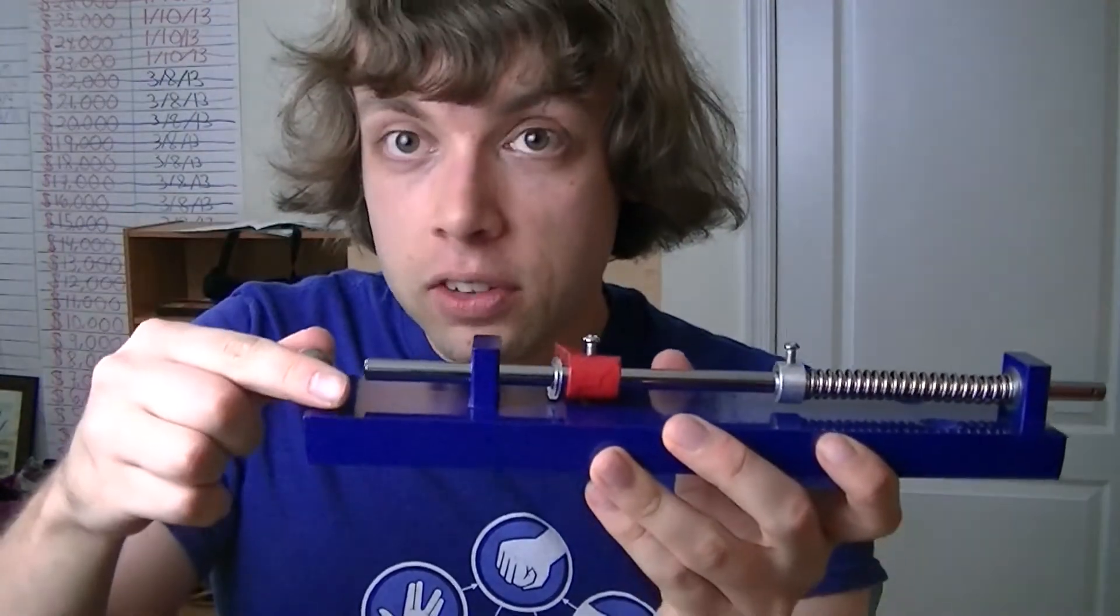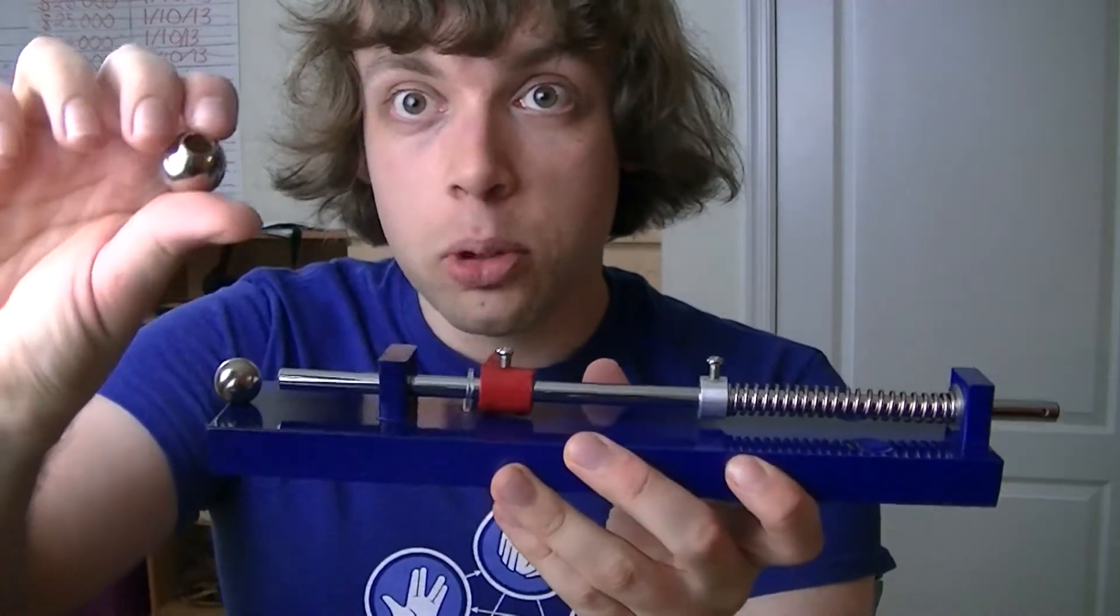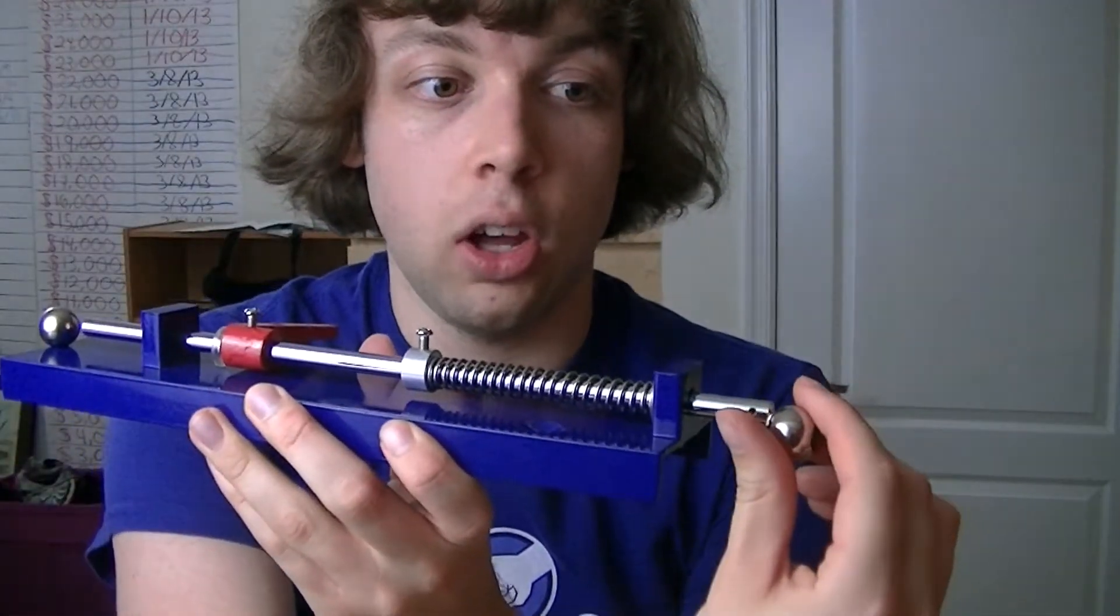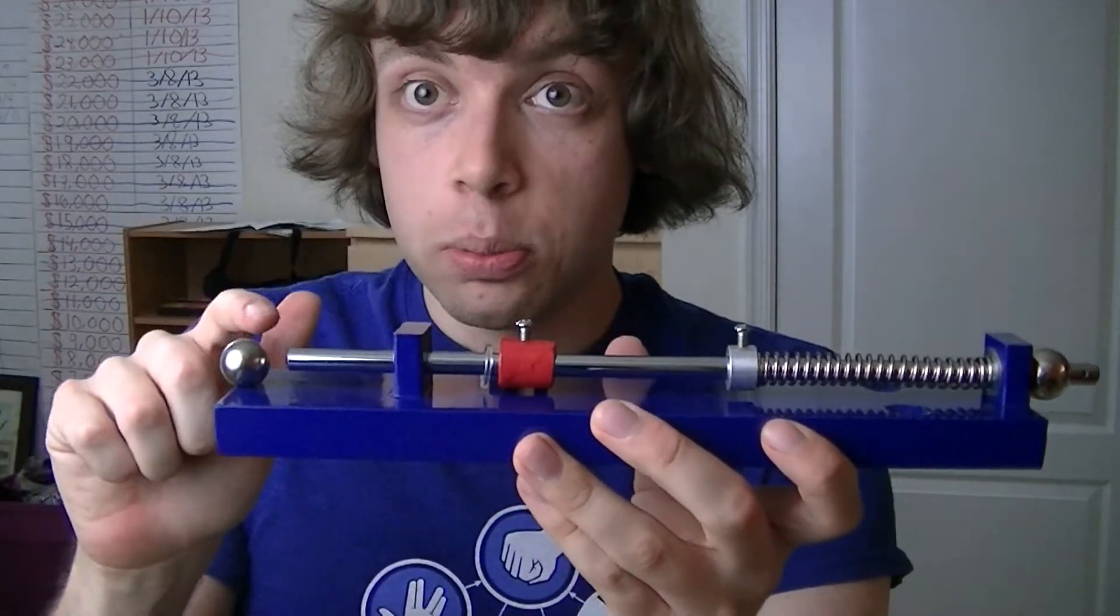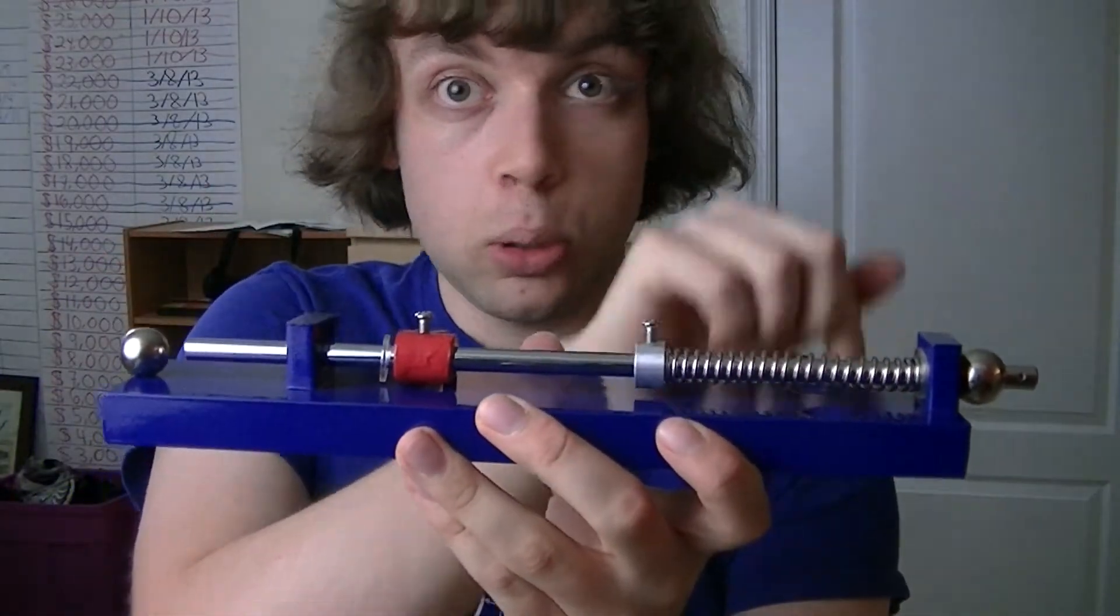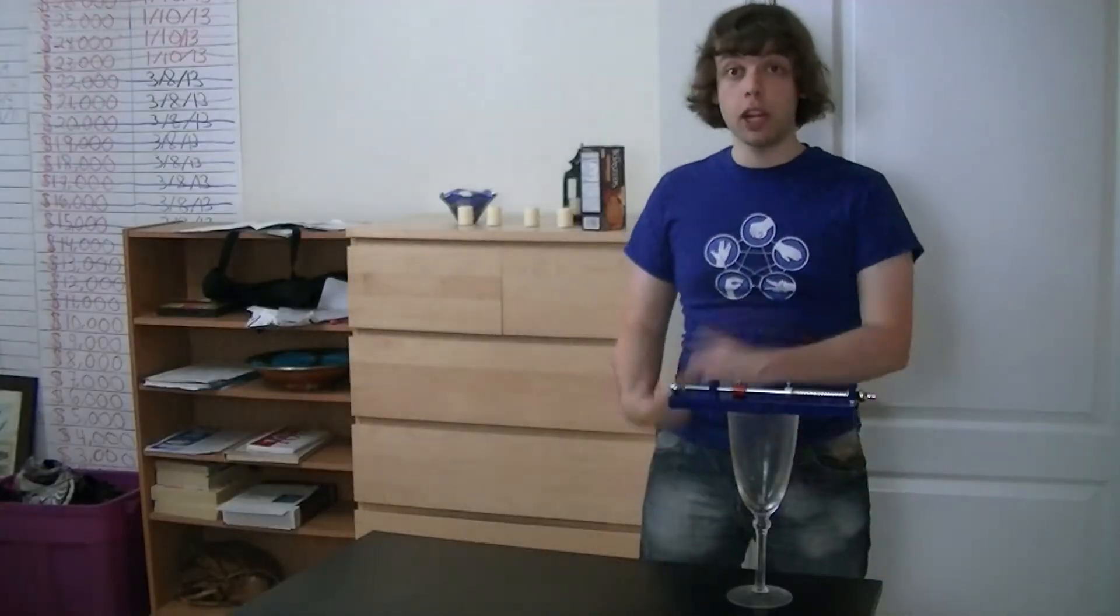I place one of these ball bearings on this end and this other ball bearing has a hole in it. I'm going to place that over this end and then all I have to do is pull this one trigger and this ball will shoot that way and that ball will drop straight down.